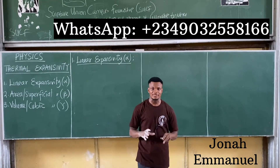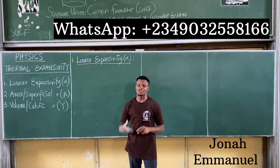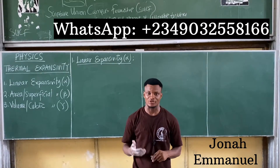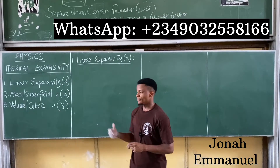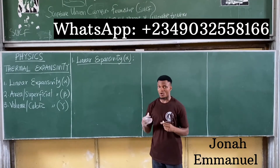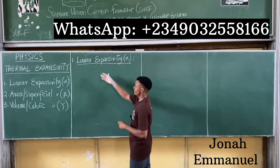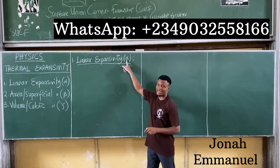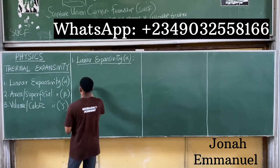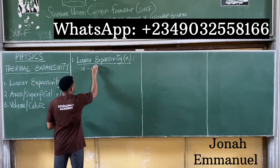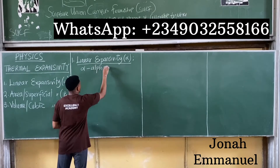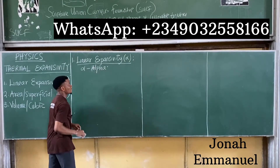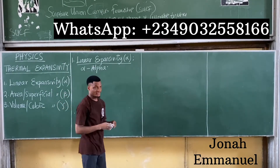When the length of an object increases on application of heat or on increase of temperature, we say linear expansivity has occurred. Linear expansivity is represented by the Greek symbol alpha. So alpha is the Greek symbol we use to represent linear expansivity.